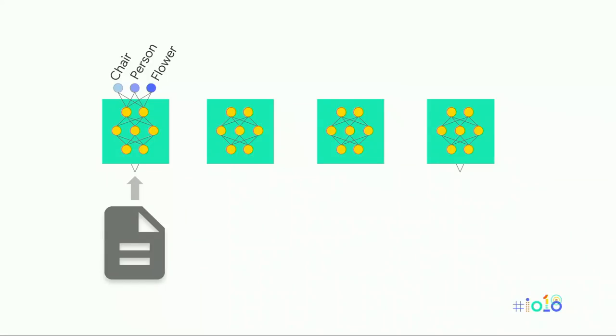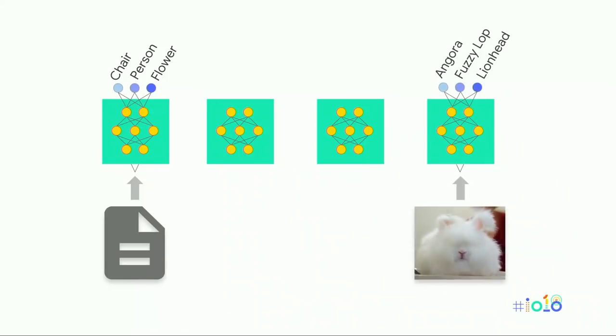Let's take a quick look at an example — image classification. Say we want to make an app to classify rabbit breeds from photos, but we only have a few hundred example photos, probably not enough to build a whole image classifier from scratch. What we could do is start from a general-purpose model, take the reusable part — the architecture and weights — remove the classification layer, add our own classifier on top, and train it with our own examples.